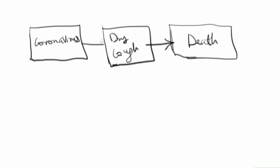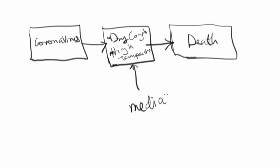Coronavirus leads to dry cough, and if the dry cough is not treated, it leads to death. We can also say coronavirus leads to high temperature. So coronavirus does not directly lead to death — it leads to something in between, such as dry cough or high temperature, which then leads to death. That variable in between is called the mediating variable, because it mediates between coronavirus and death.